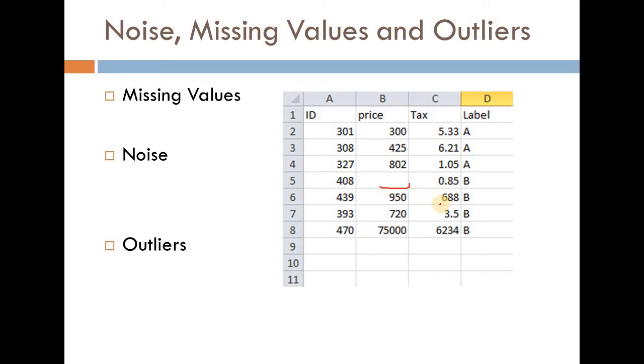As you can see over here, the product that has got ID 439 has a tax value of 688. Now if we look at most of the values of tax column they are in a single digit, for example 5.33, 6.21, 1.05, and over here this value is a lot different from the rest of the values which means this is most probably a noise value.